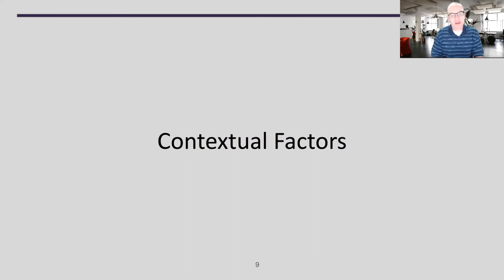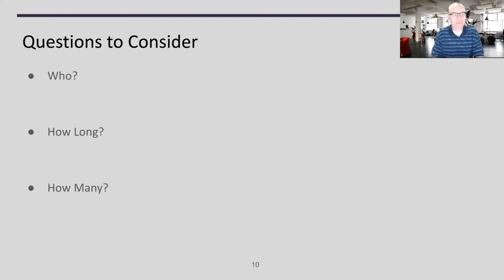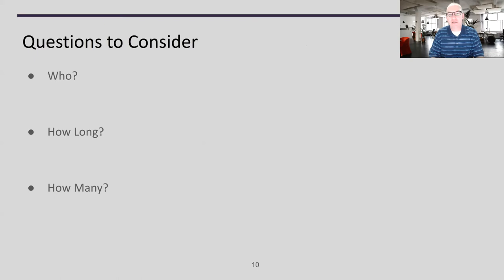We also need to think about contextual factors that might affect our study design decisions. Consider: who is participating — who's teaching the course and who are the students? How long do you have them — one assignment, one class period, a whole semester, or a whole program? And how many — a small number of subjects you can get lots of data about, or a large population where you can only collect a small piece of information about each one? These factors all affect how we go forward with our study designs.